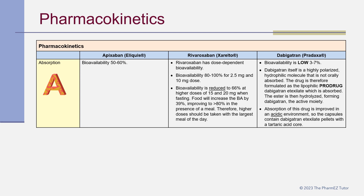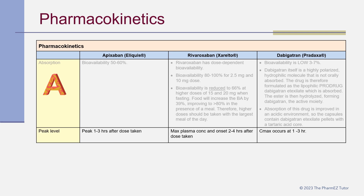Dabigatran's bioavailability is very low, roughly 3 to 7 percent. Dabigatran itself is a highly polarized hydrophilic molecule that is not orally absorbed. The drug is therefore formulated as the lipophilic prodrug dabigatran etexylate, which is absorbed. The ester is then hydrolyzed forming dabigatran, the active moiety. Absorption is improved in an acidic environment, so the capsules contain dabigatran etexylate pellets with a tartaric acid core. Peak drug levels for apixaban occur at 1–3 hours, rivaroxaban at 2–4 hours, and dabigatran at 1–3 hours after dosing.